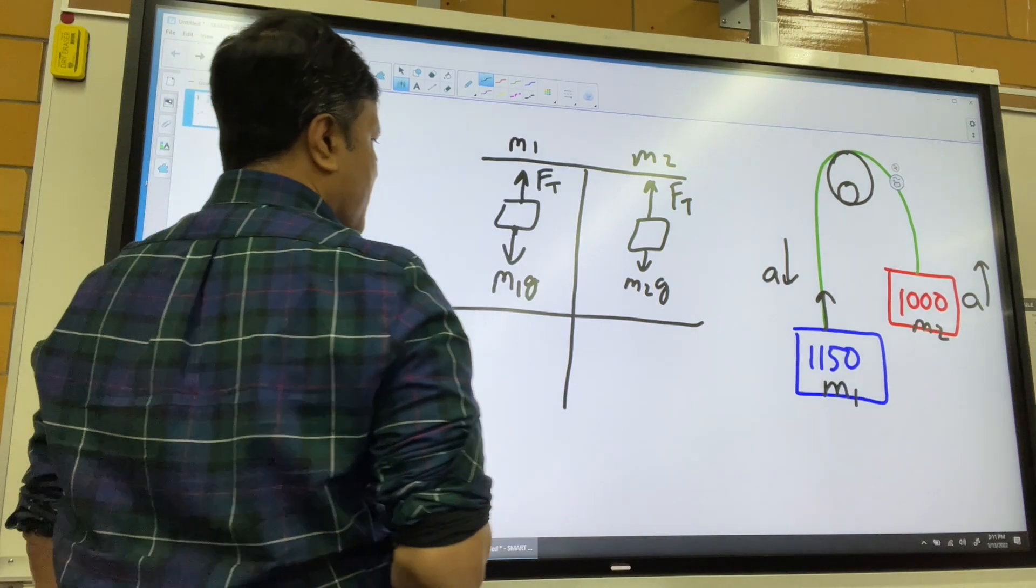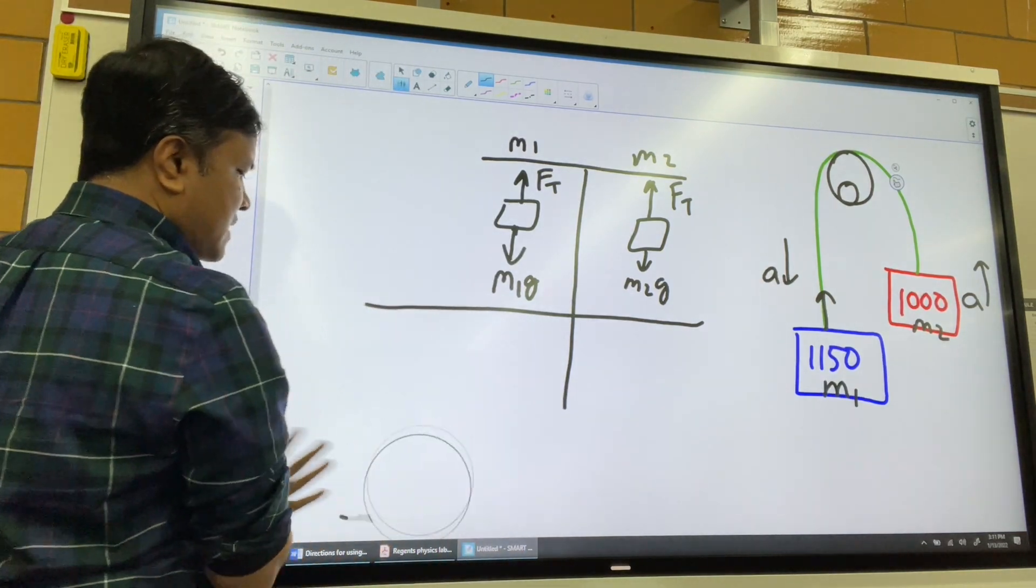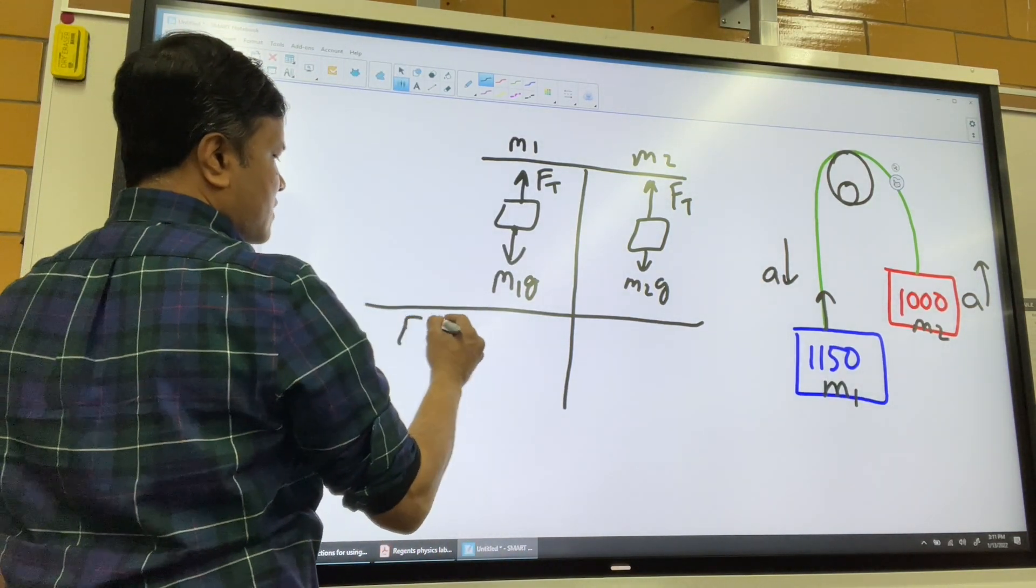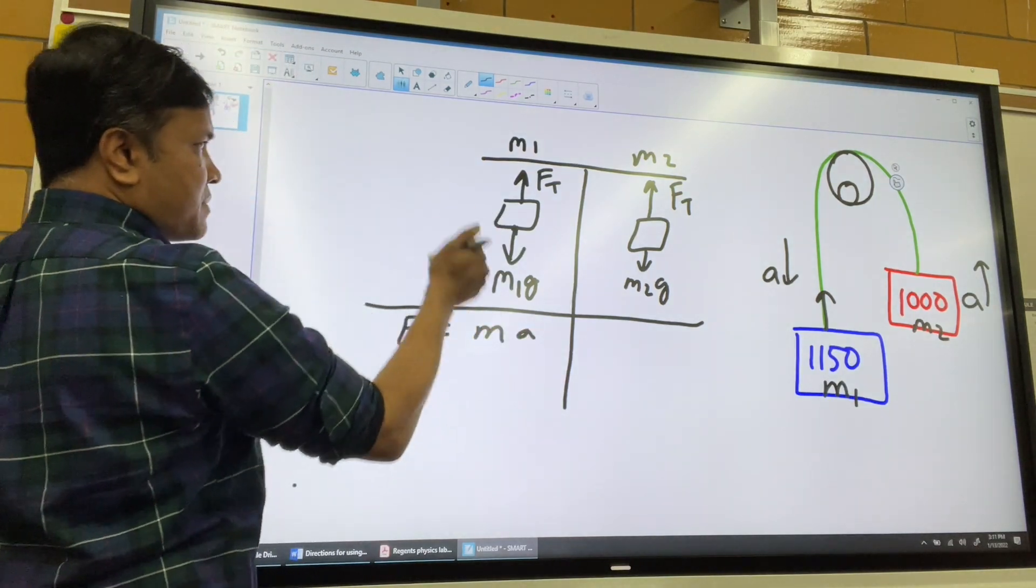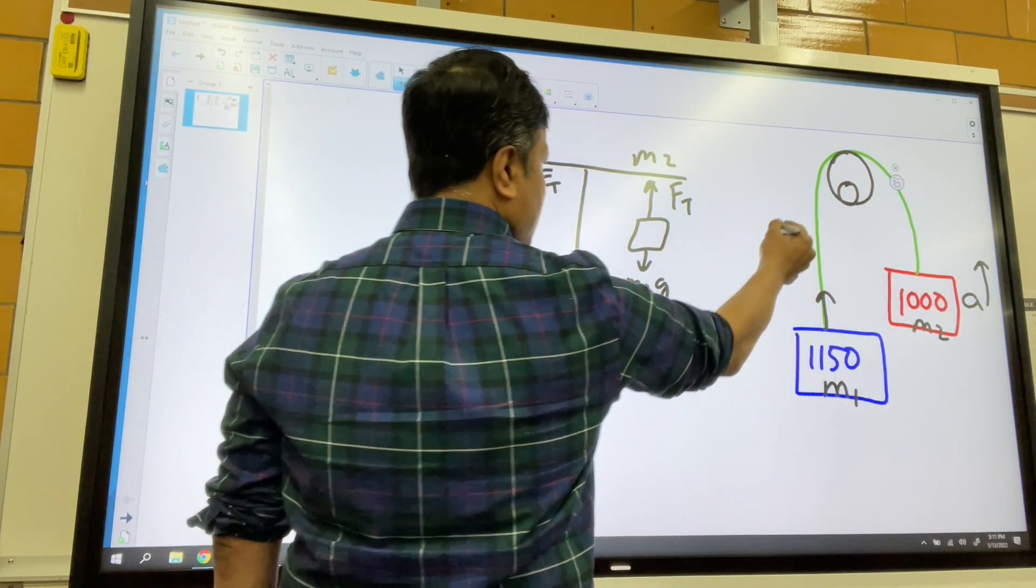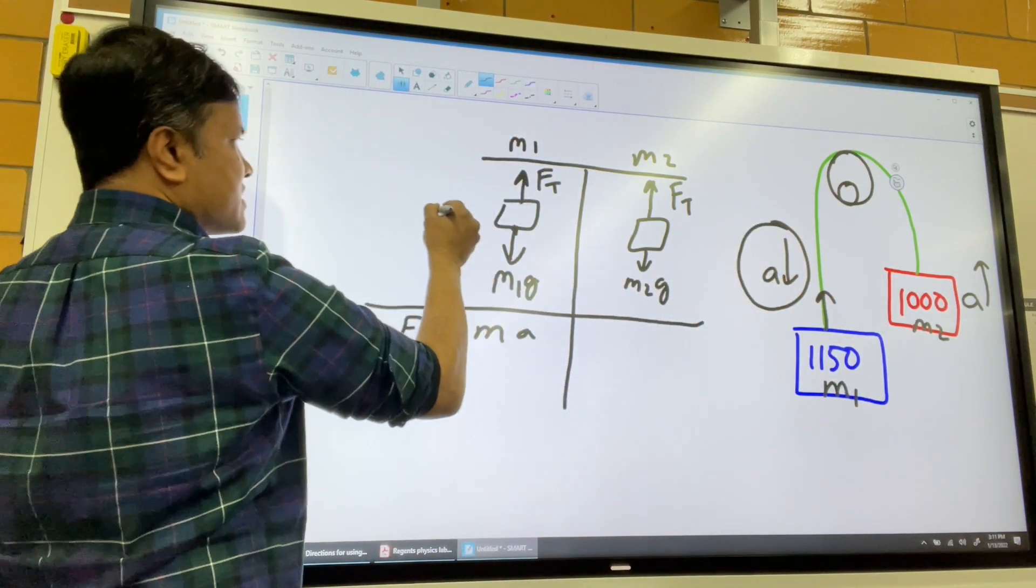Now we're going to use Newton's second law. So what does Newton's second law tell us? F equals MA. Of course, this is negative because this one is accelerating downward. Accelerating downward means negative A.